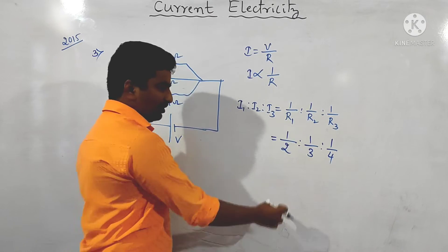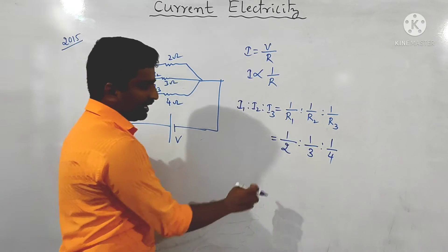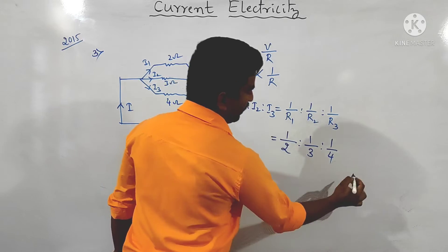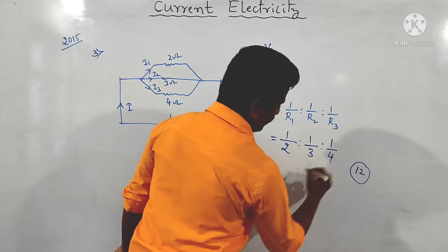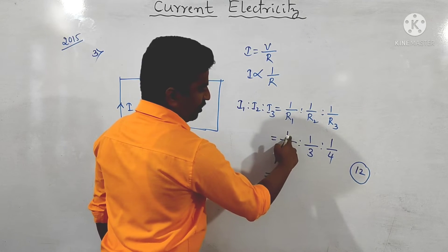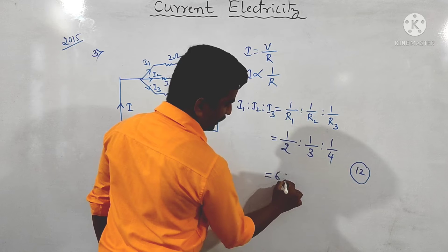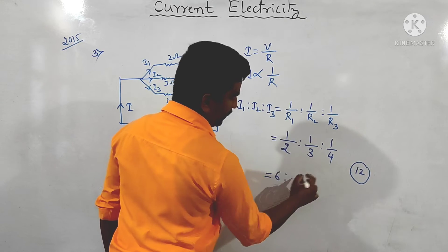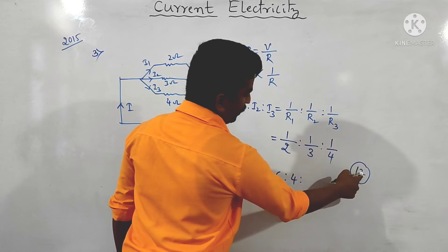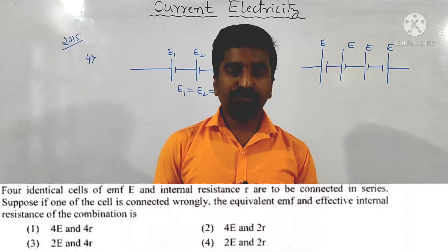The answer options are not in fractional form, so we find the LCM which is 12, and multiply each fraction by 12. So 1/2 × 12 = 6, 1/3 × 12 = 4, and 1/4 × 12 = 3. Therefore the ratio of currents is 6 : 4 : 3. This is the answer for the given question.